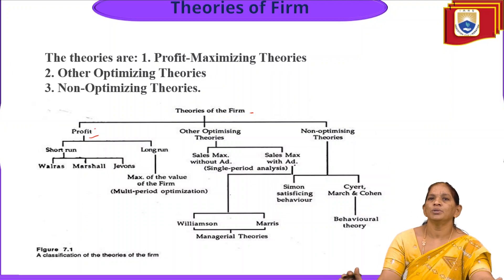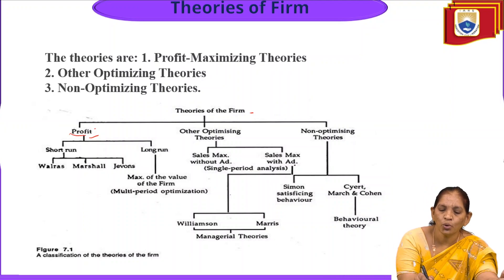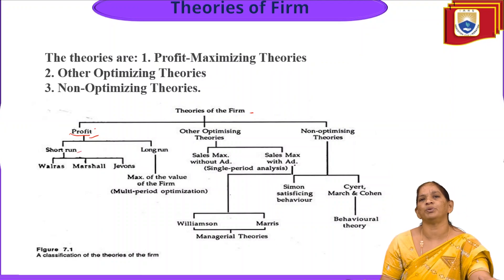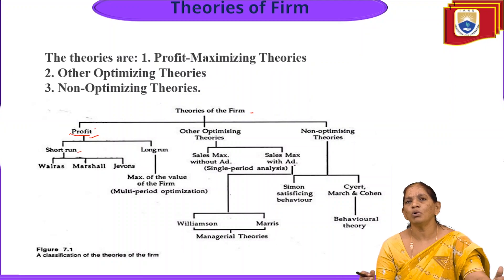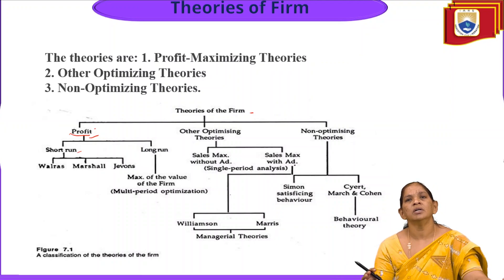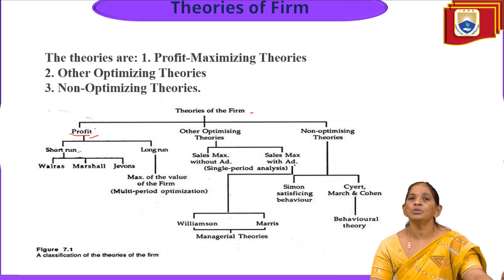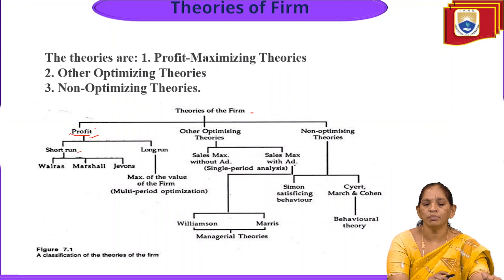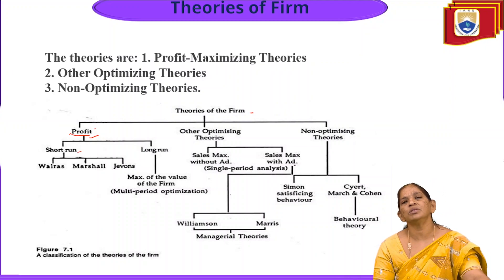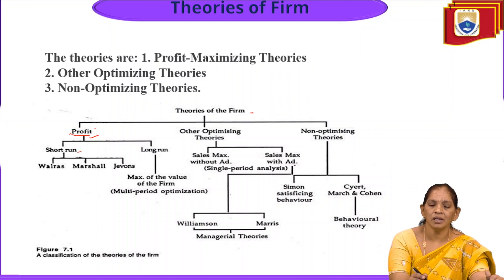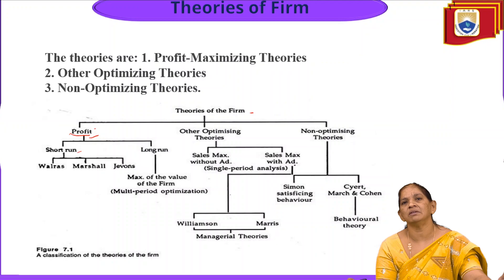The first category — profit-oriented theories — holds that the main aim of every business organization is to earn profit. In the short run, relating to roughly one year, theories were given by Wallis, Marshall, and Jones, covering Marshall's maximization theory, profit-oriented theory, and welfare theories.